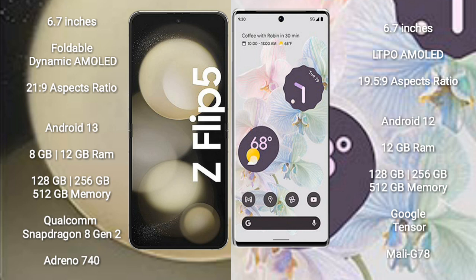The Samsung Galaxy Z Flip 5 runs on Android 13, while the Google Pixel 6 Pro runs on Android 12. The Samsung Galaxy Z Flip 5 comes with 8GB or 12GB RAM, 128GB to 512GB internal storage, a Qualcomm Snapdragon 8 Gen 2 processor, and Adreno 740 GPU.